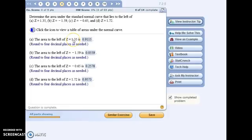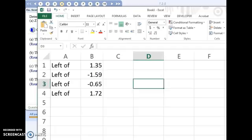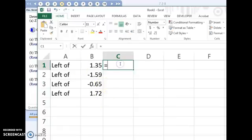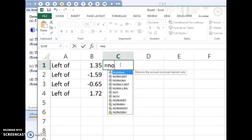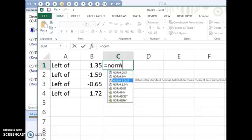So I'll find the area to the left of these four values. So in Excel, here's the four values. And we would use the function NORM.S. The dot S stands for standard normal. And then DIST. So I'm going to select that one.